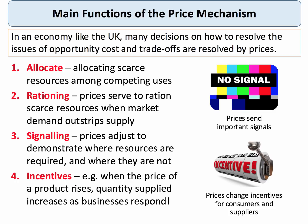The UK is a mixed economy — we have a mix of private sector and state activity. Most economies, of course, are mixed economies. But what are the key functions of the price mechanism? Allocation, rationing, signaling. The price mechanism helps to allocate scarce resources amongst competing users.